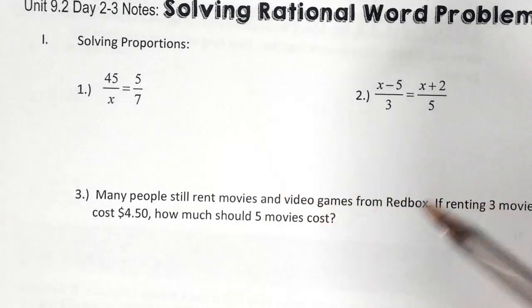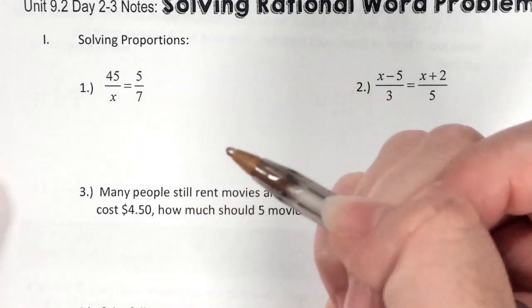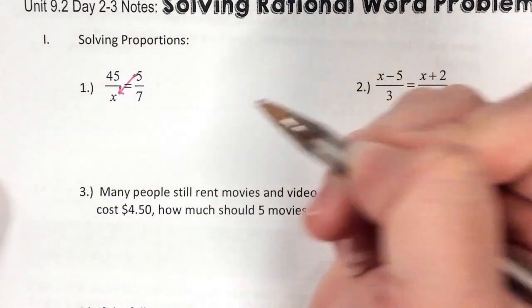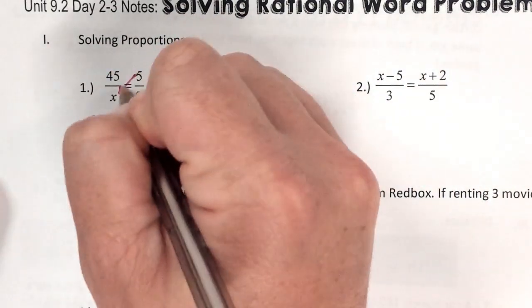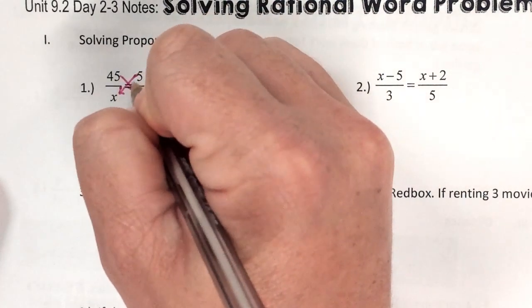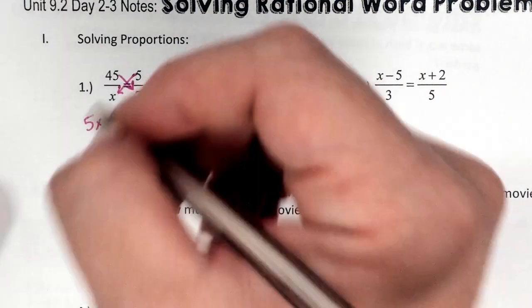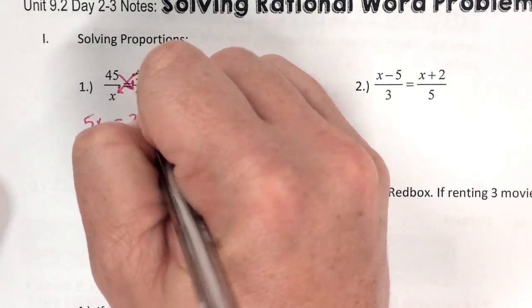On number one and two, they're already set up and we're literally just going to cross multiply. So what's 5 times x? Bring down your equal sign. And then what's 45 times 7? 315.